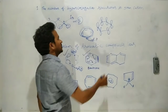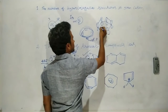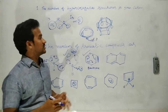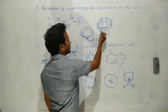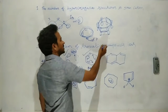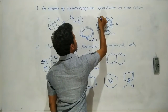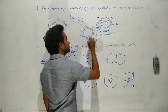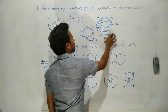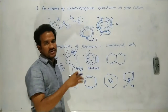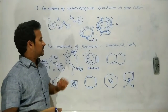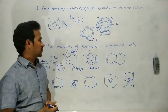In benzyne, the parallel p orbitals allow conjugation among 6 pi electrons. The remaining one p orbital — from the carbons that lost their hydrogens — is in the plane of the benzene ring, not perpendicular. That in-plane pi bond cannot participate in conjugation because it is not parallel to the other p orbitals. So in benzyne, only 6 pi electrons are involved in conjugation, making it an aromatic compound.